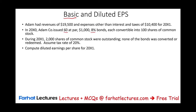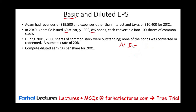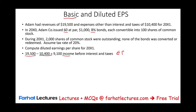Go ahead and start your free trial today. To compute basic earnings per share, it's net income minus preferred dividend (if any) divided by the average number of common shares outstanding. We don't have preferred stock, so no preferred dividend. We need to compute an income statement. Starting with revenues of $19,500 minus expenses gives us EBIT of $9,100.